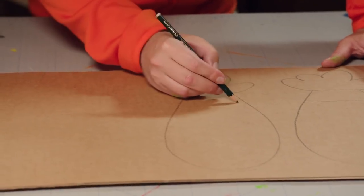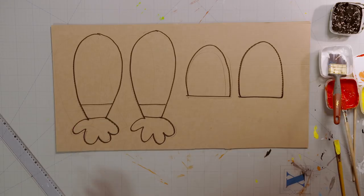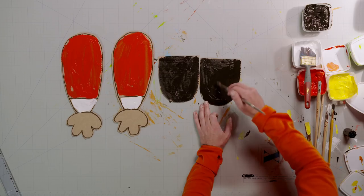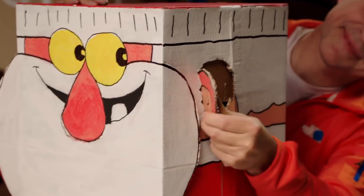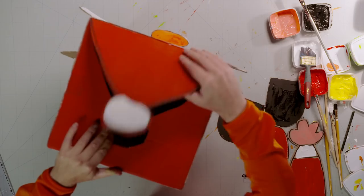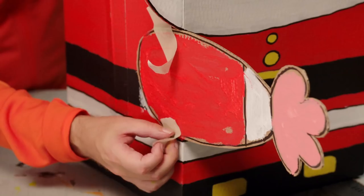Now draw, cut and paint his arms and feet. Then cut and fold out his ears, chin, nose and hat. Finally, glue on the boots and arms.